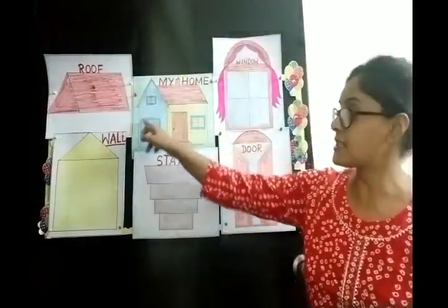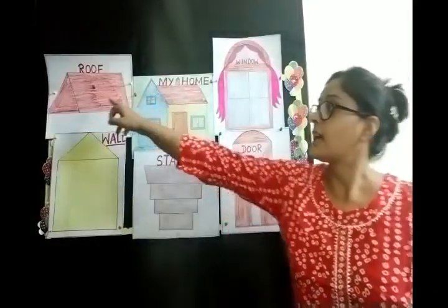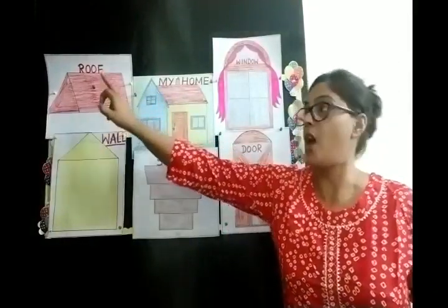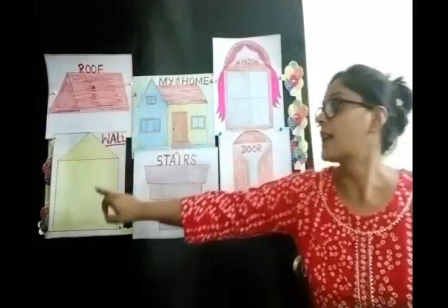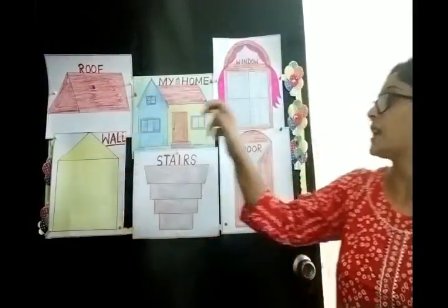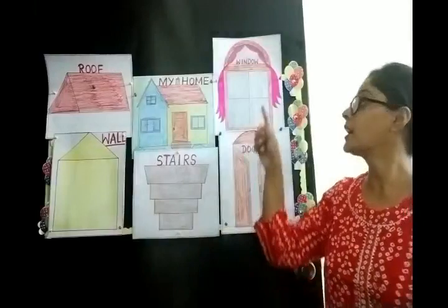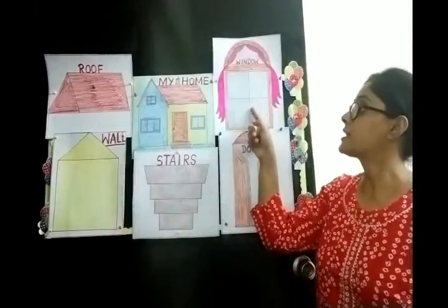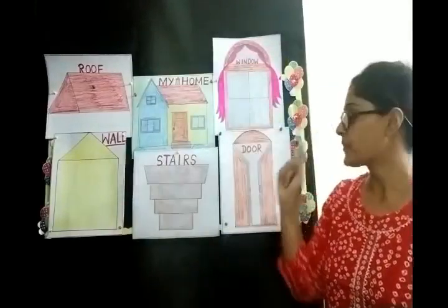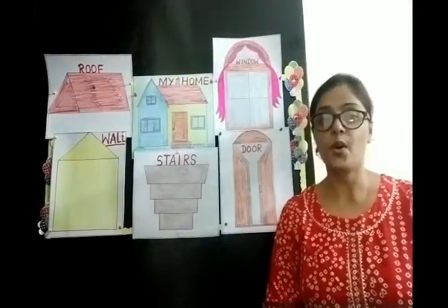So this is a house. This is the roof of the house. This is the wall of the house. These are stairs. This is the window. And this is the door.